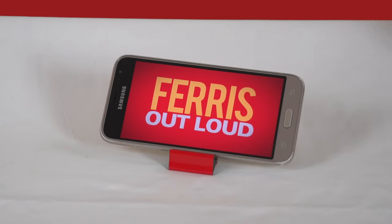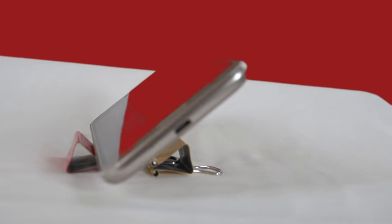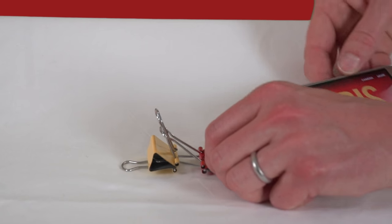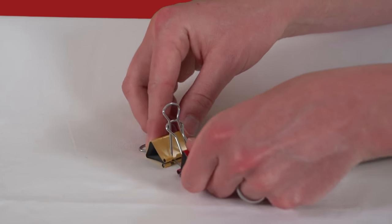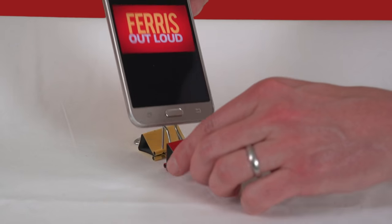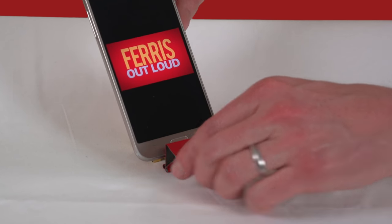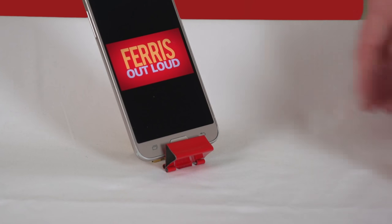This stand is nice and solid. One of the reasons for this is all of the surface contact at the base here. And because of that you can actually bend this clamp all the way up. And now you have a vertical stand. Pretty cool.